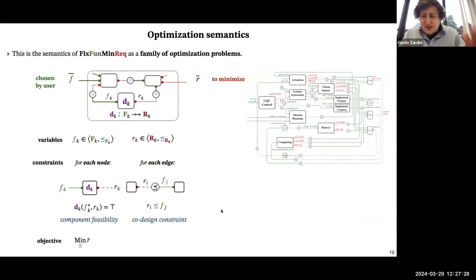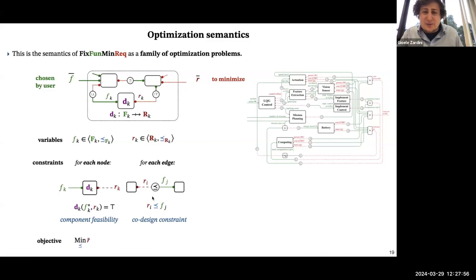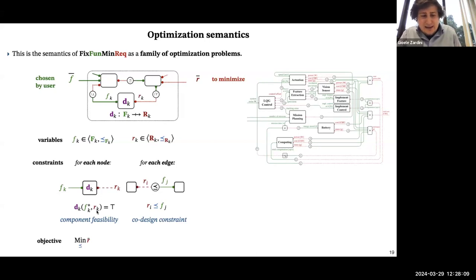In terms of optimization, this is a new class of optimization problems that's a bit exotic. The class of optimization problems is specified by a graph, where nodes are design problems and edges are interconnections between them. The variables are these partial orders. There are two kinds of constraints: each node has to be a feasibility relation, and whenever you put systems in series, the resources required by one system should not exceed the functionality provided by another. The entire objective is to minimize resource consumption at the system level.